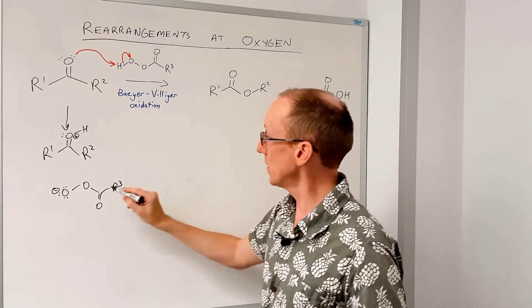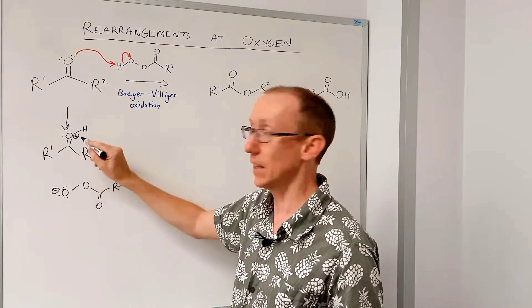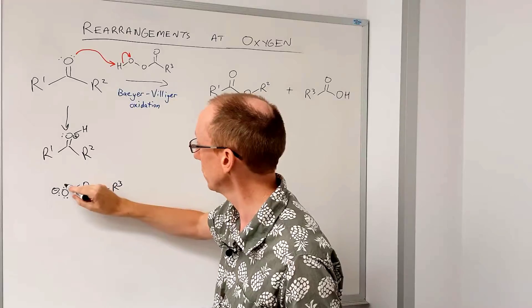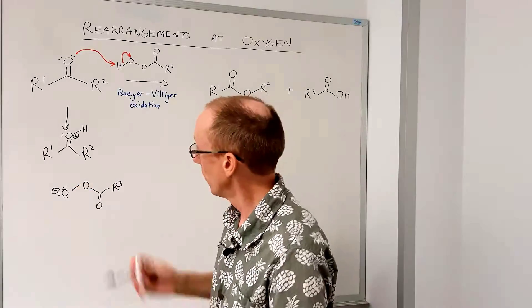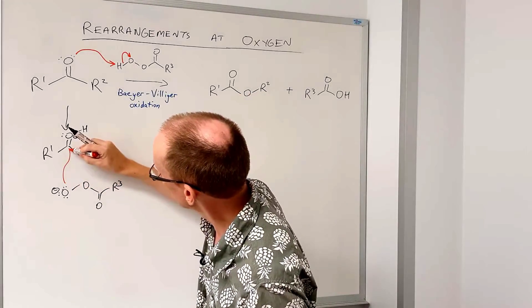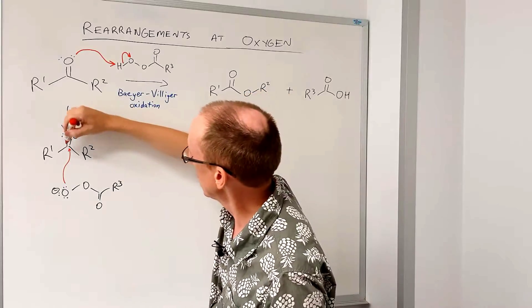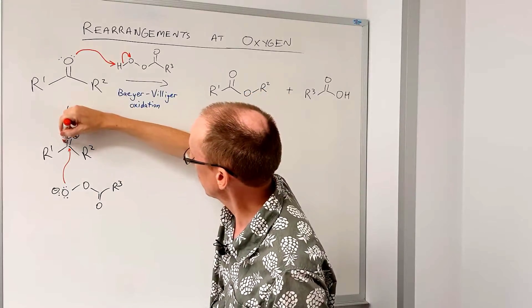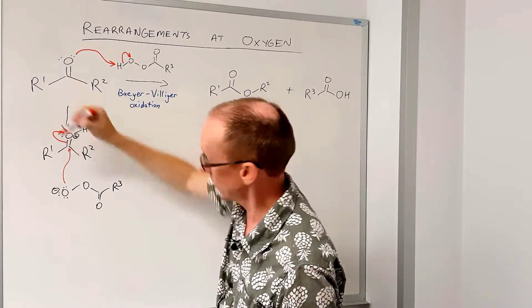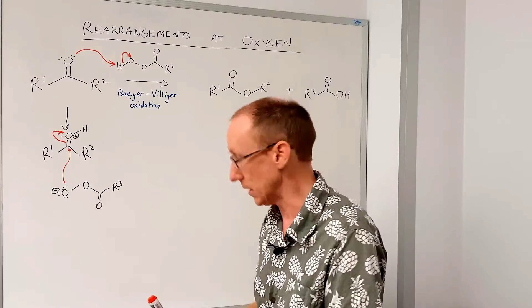We can draw a mechanism where this then attacks that activated carbonyl group through this kind of curly arrow, and then electrons flow out onto here, and we end up with an intermediate.